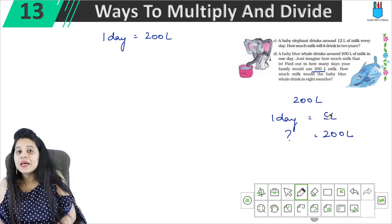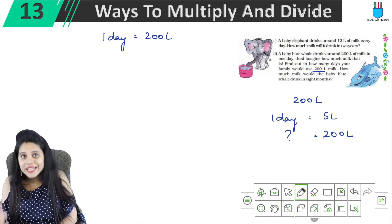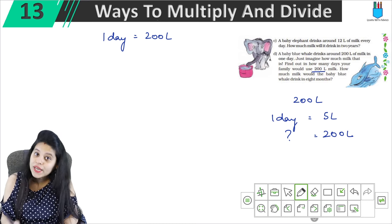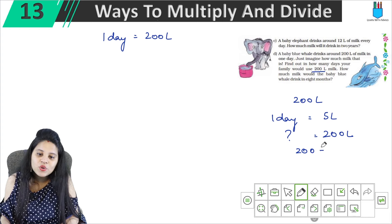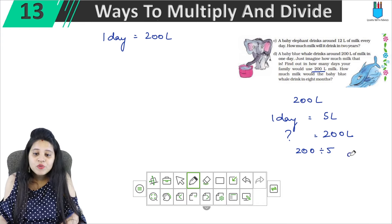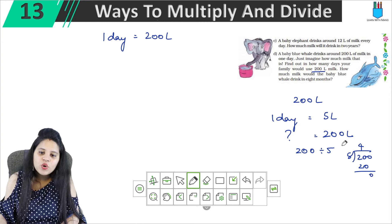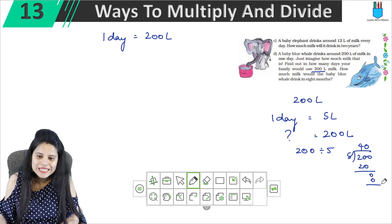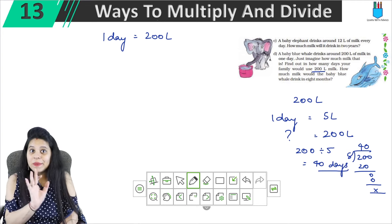How many days will it take to consume 200 liters at 5 liters per day? We need to divide 200 by 5. 5 into 20 is 4, so 5 into 200 is 40. So our family would consume 200 liters in 40 days.